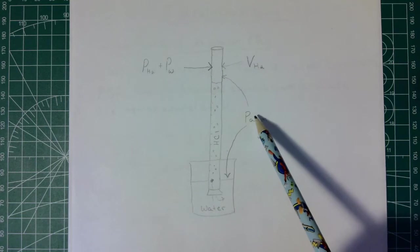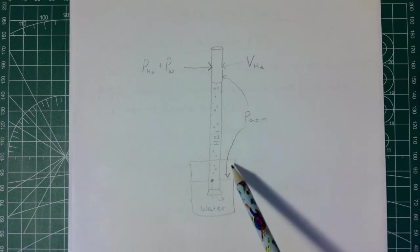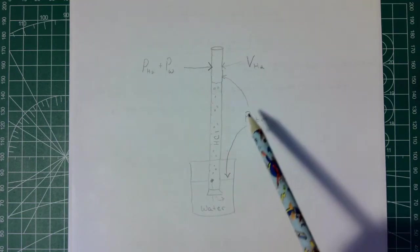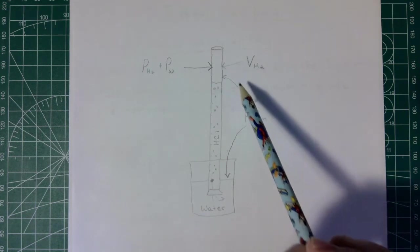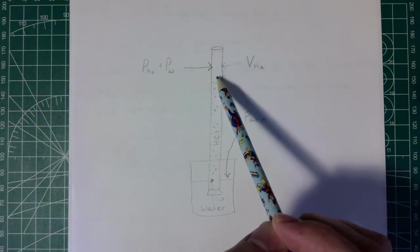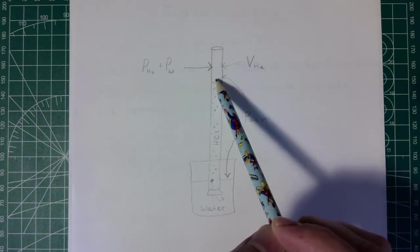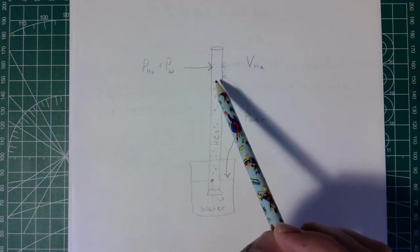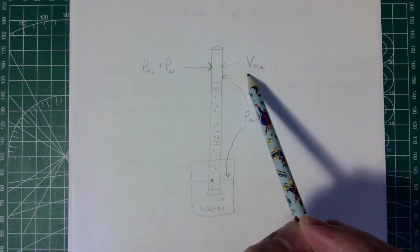We're going to have the atmospheric pressure pushing down here, and what that's going to do is make it so this is also at atmospheric pressure. We're going to be able to read off the volume off of the tube of the hydrogen that we collect.